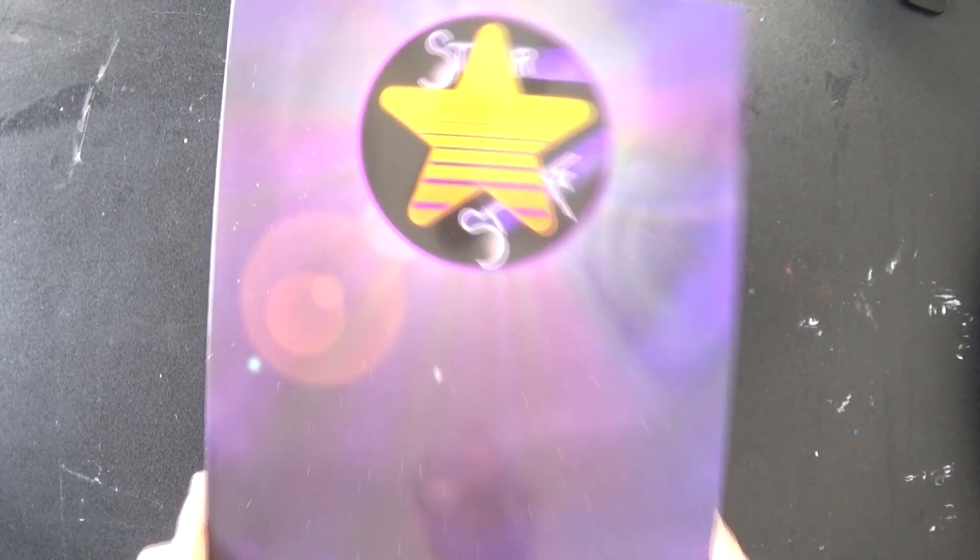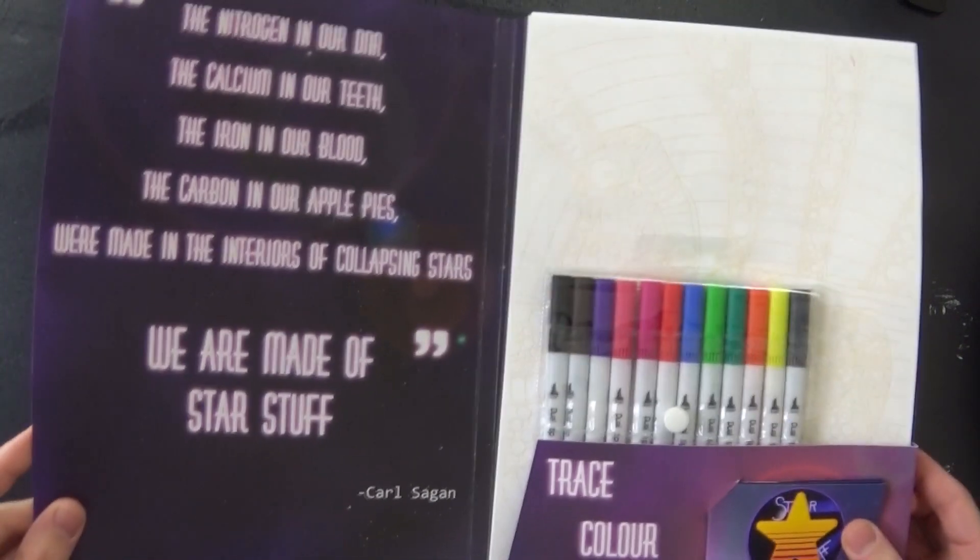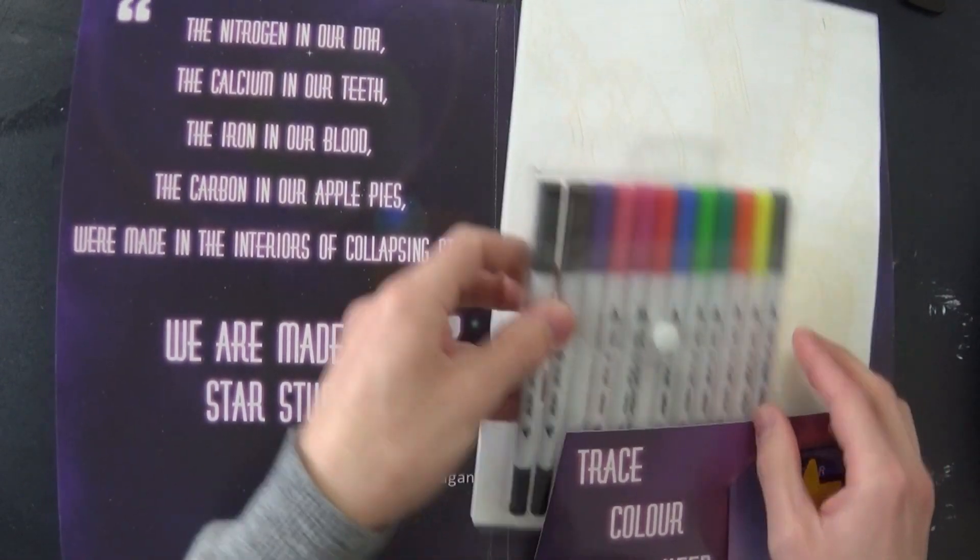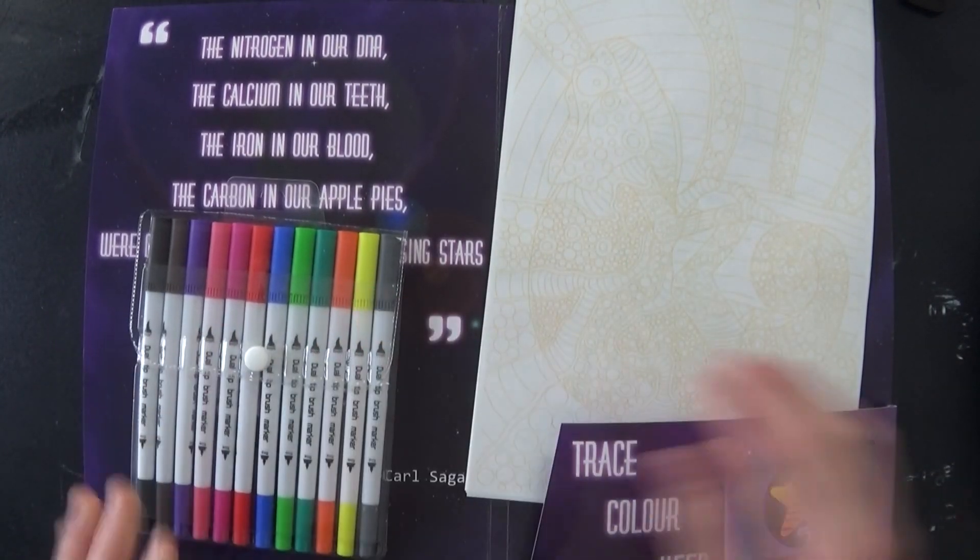Okay, so here we are. Here's the Star Stuff Art Kit in its nice little folder. Inside you will find one set of nice dual tip markers.